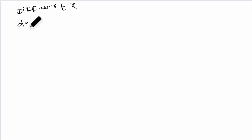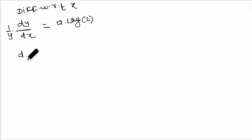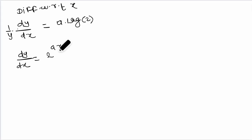Now just differentiate with respect to x. You will be getting 1/y into dy/dx equal to a into log 2, since that is a whole constant. So replacing y, we get dy/dx equal to 2 to the power ax into a into log 2.